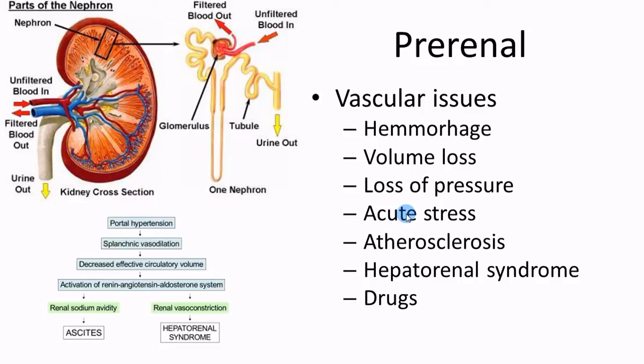Pre-renal diseases all have one thing in common: they affect the blood flow going into the kidney. It could be blood loss, volume loss, or blood pressure loss. Your brain starts causing vasoconstriction to the kidney, redirecting blood to the brain and heart. The kidney needs blood to stay alive, so it starts shutting down. It could be acute stress — way too much epinephrine causing vasoconstriction at the kidney.